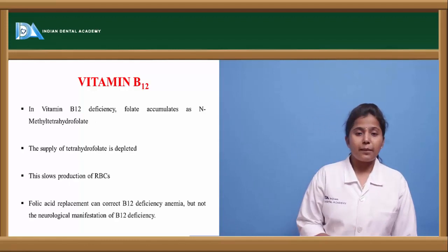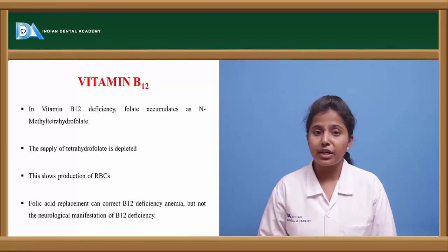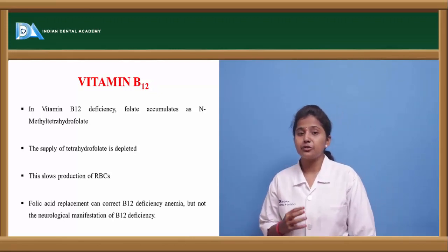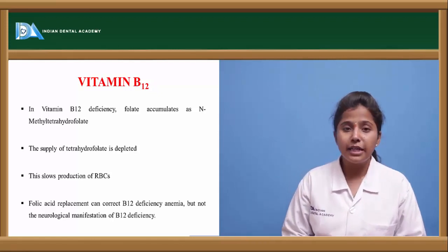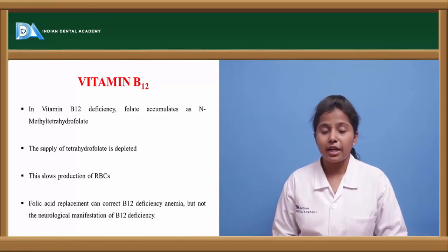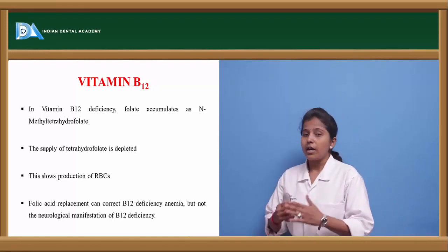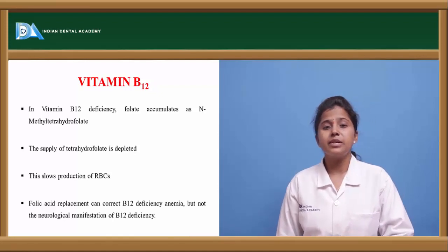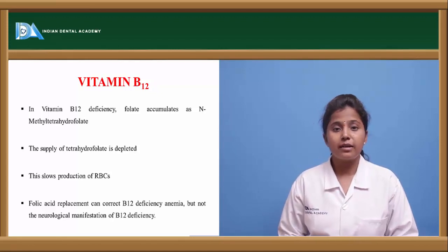When there is any deficiency of vitamin B12, folate accumulates as N-methyltetrahydrofolate. When tetrahydrofolate is depleted and N-methyltetrahydrofolate accumulates, it decreases the production of RBC. When RBC production is decreased, it causes various types of anemia or blood disorders.